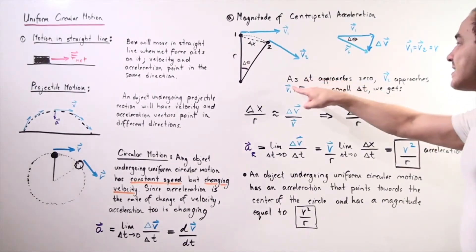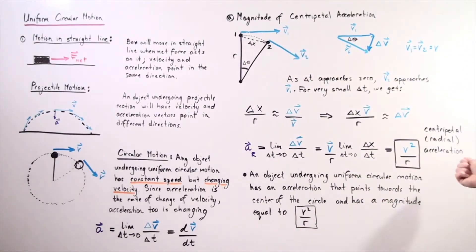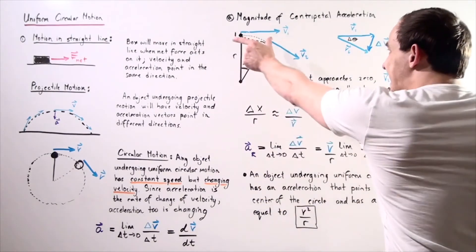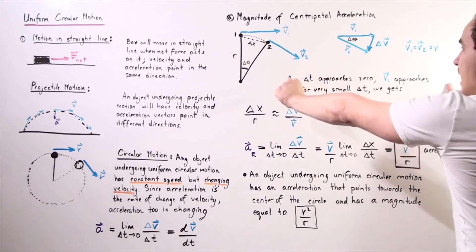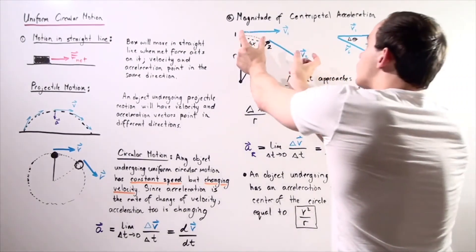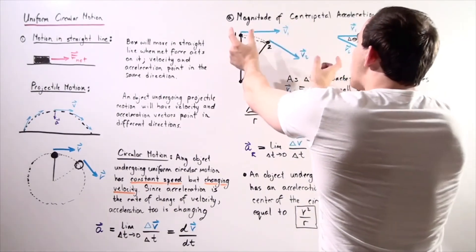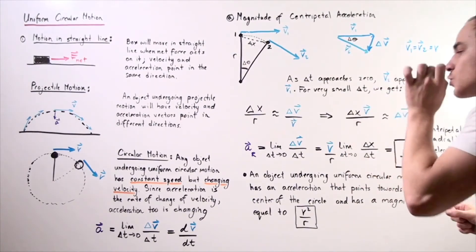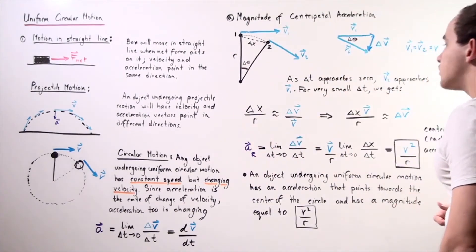As the change in time approaches zero, velocity at point two approaches velocity at point one. The magnitudes are already the same; what this is saying is that as delta-t approaches zero, the directions begin coinciding. Eventually, as we take the limit, the directions are exactly equal, and at that point the acceleration points directly towards the center of our circle.